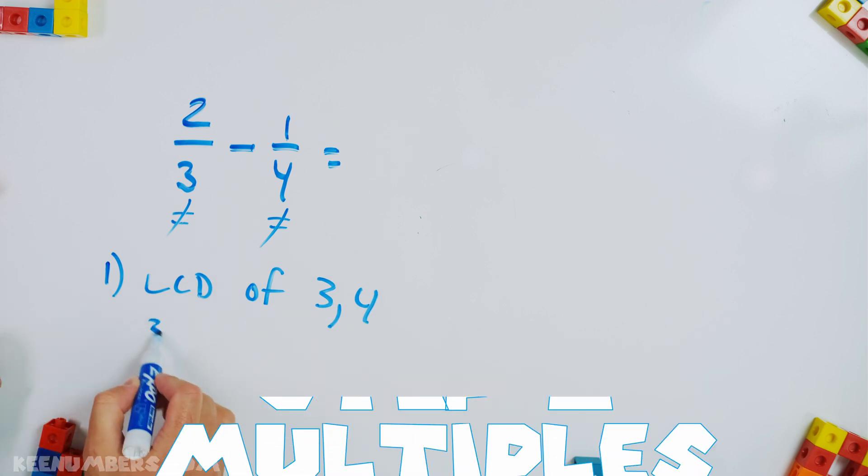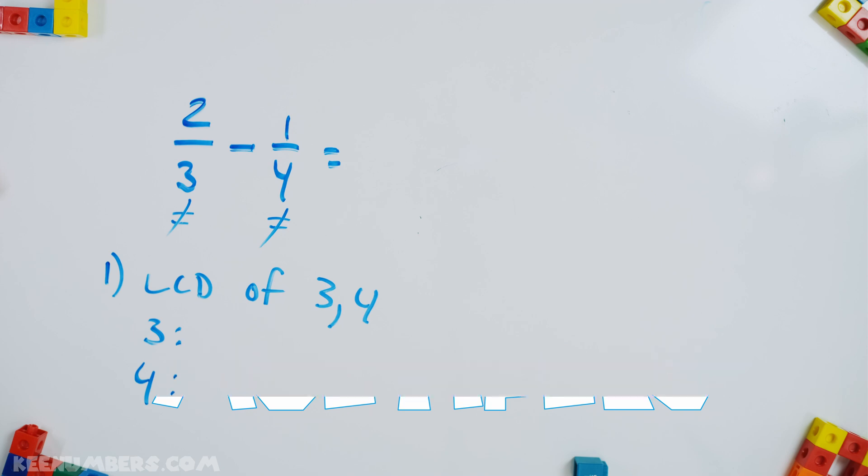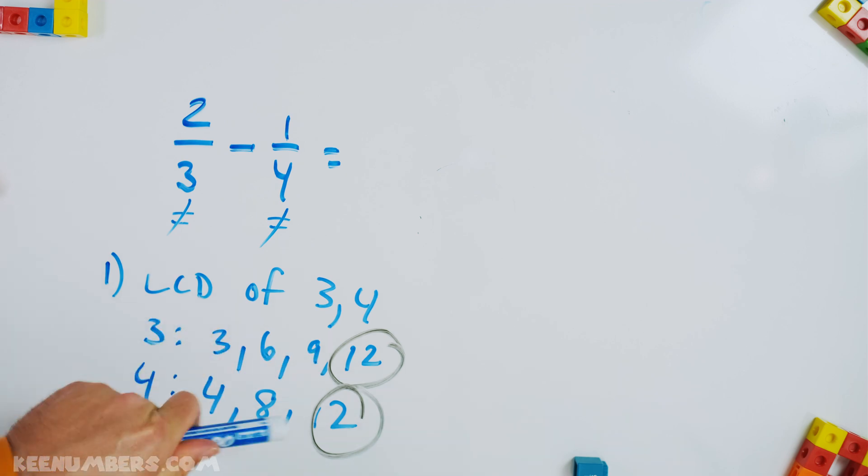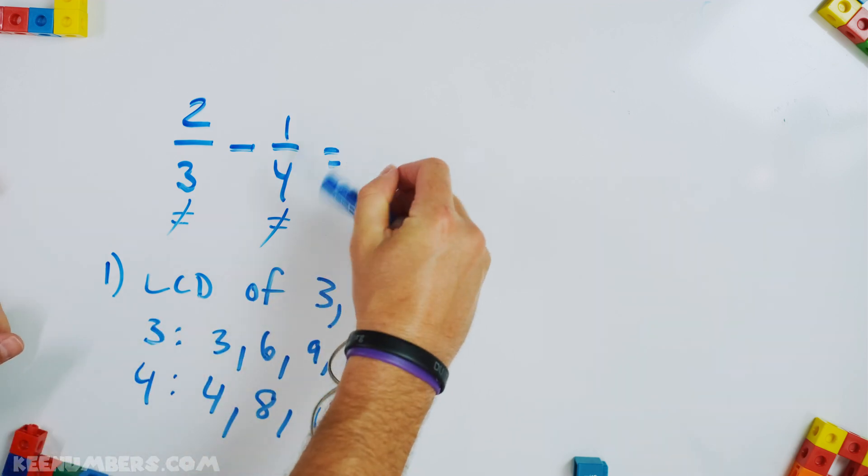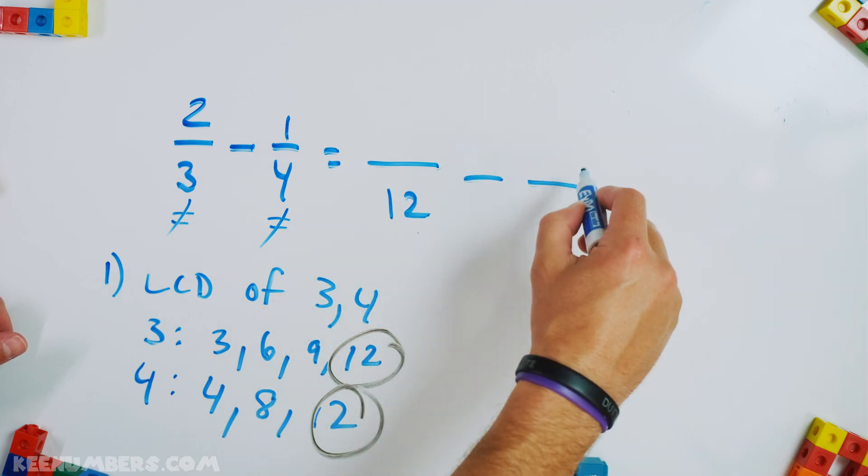We need to look at multiples of three and we need to look at multiples of four. Pirate Sam says it's 12. Let's see why. We've got three, six, nine, 12. We have four, eight, 12. Those are multiples of four and bada boom, bada bing. Pirate Sam is absolutely correct. 12 is the smallest number in both lists.